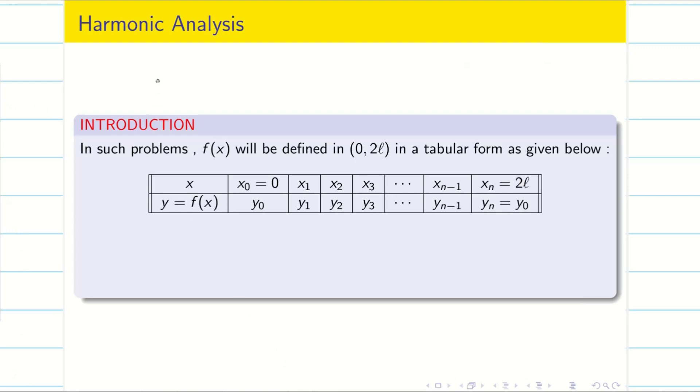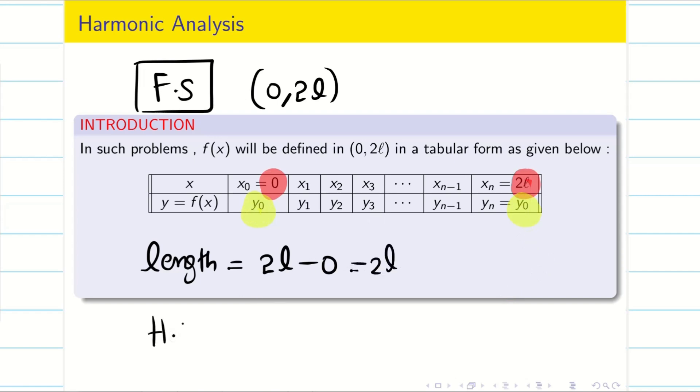Here, if the problem is given under Fourier series, then the interval is considered to be 0, 2l. And we take the length as 2l minus 0. As we discussed in the previous video, the highest value, the last value minus the first value, provided their y value should be same. Then I can find the length as 2l. And for my problem, we need half length. Half length is going to be l.